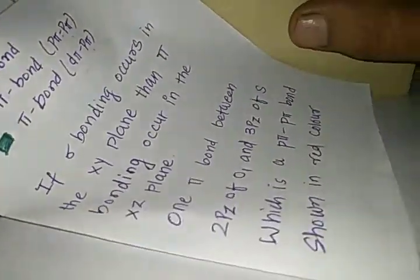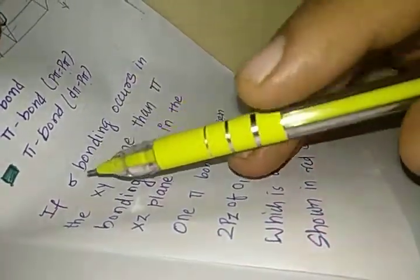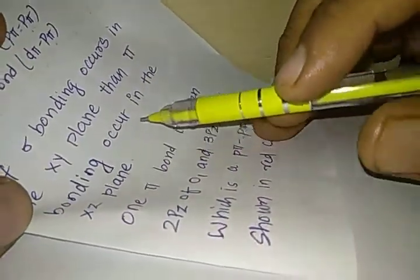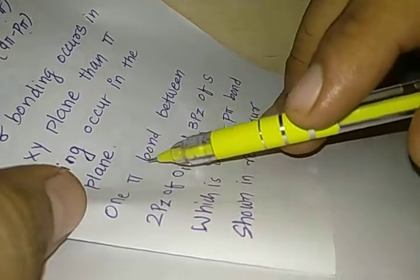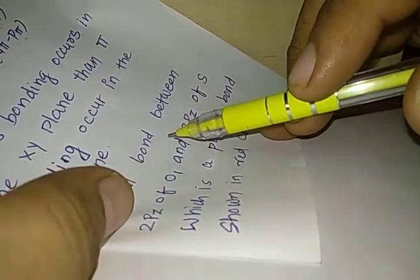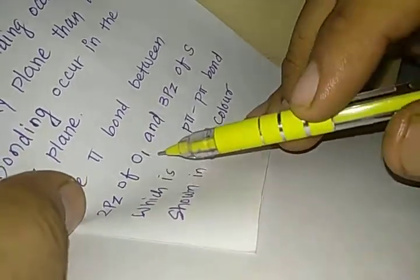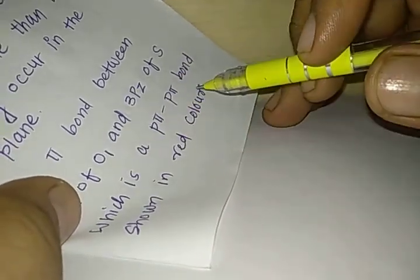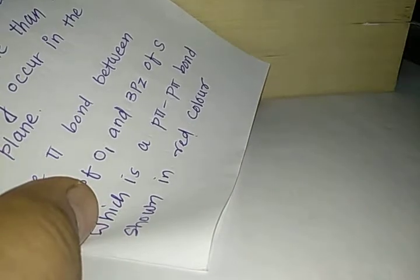So you can easily understand this again. If sigma bonding occurs in the xy plane, then pi bonding occurs in the xz plane. One pi bond between 2pz of O1 and 3pz of S which is a ppi ppi bond shown in the red color.